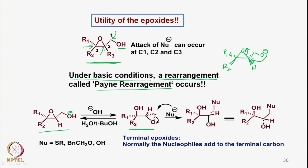We can then expect that this particular O-minus opens up the epoxide in an intramolecular fashion to give a new epoxide. That means this negative charge attacks onto this carbon and the carbon-oxygen bond of the epoxide breaks, leading to an OH group in this fashion. The epoxide will now be a terminal epoxide, because we started with an epoxide positioned in the middle where on one side we had the R1 and R2 groups and on the other side we had CH2OH and H.